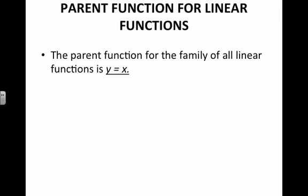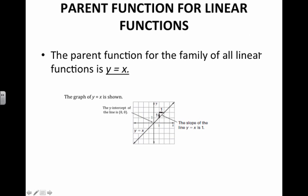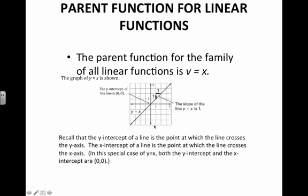Let's look at the parent function for linear functions. The parent function for the family of all linear functions is y equals x. The coefficient of the x term is always the slope, so since the coefficient is 1, the slope is 1. Because the line y equals x crosses through 0, 0, that is both the y-intercept and the x-intercept. The y-intercept is the point where the line crosses the y-axis, and the x-intercept is the point where the line crosses the x-axis.